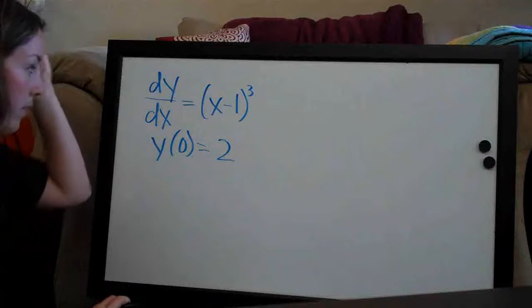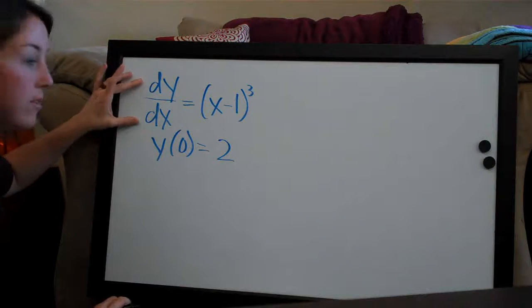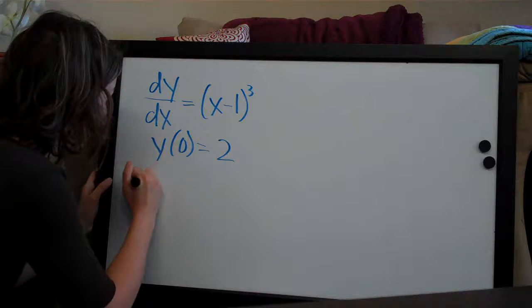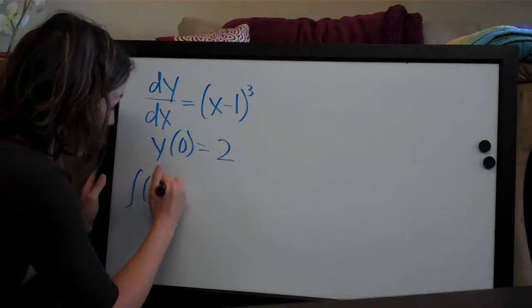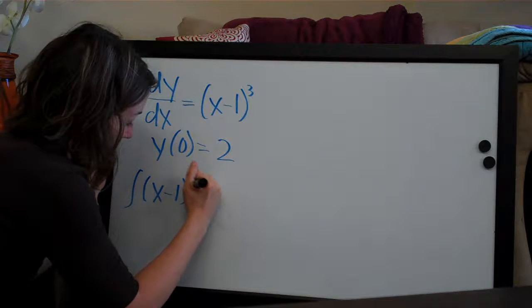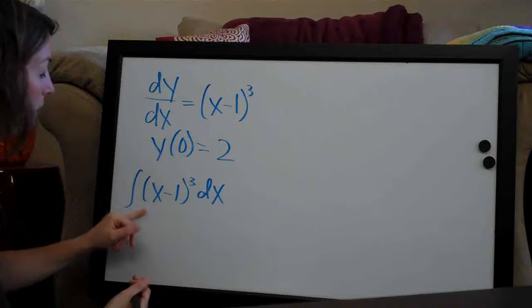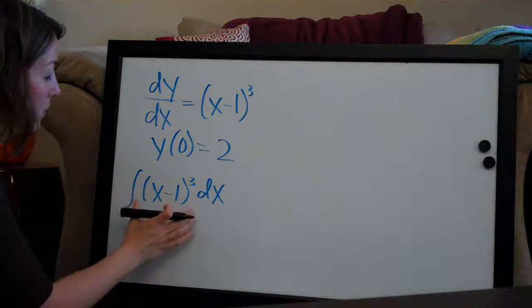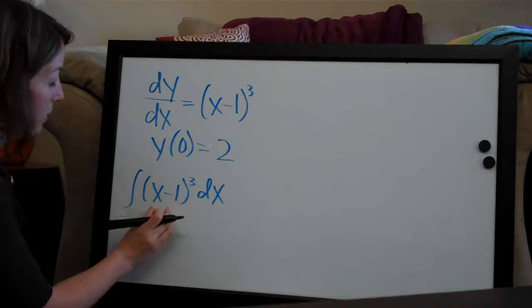So with initial value problems, we take the integral of this function first. So the integral of (x-1)³ dx. We're going to use chain rule, deal with the outside of this function first and then the inside.